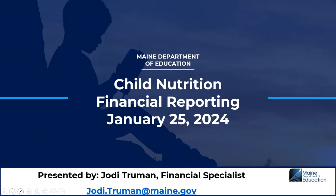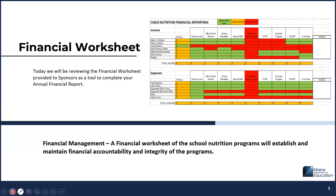Good afternoon. Thank you for joining me today. I am Jody Truman, financial specialist with child nutrition. Today we'll be looking at one method to track your child nutrition revenue and expenses. This method will transition to your annual financial report that is completed in CNPweb yearly. By using this worksheet with your detailed account summary from your business office, it will help you maintain financial accountability with your child nutrition program.